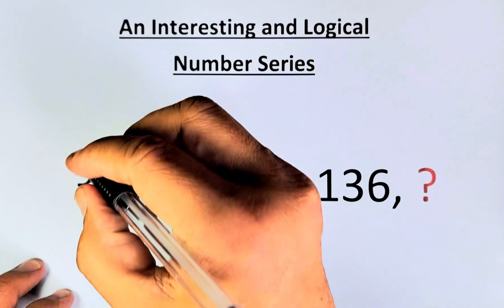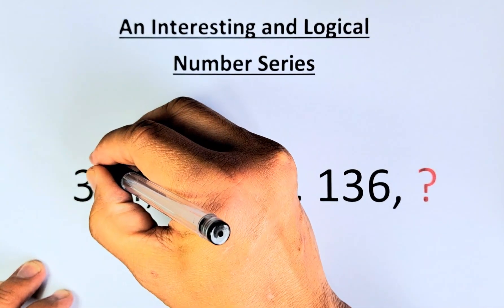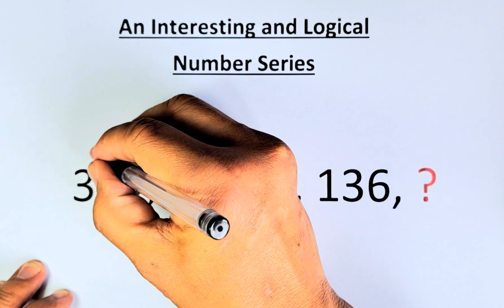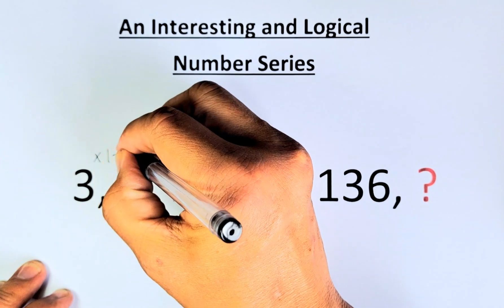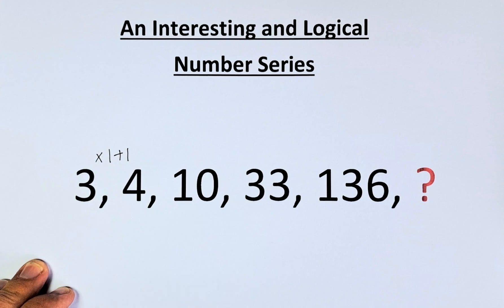To get from 3 to 4, we actually need to do two mathematical operations. You're going to multiply by 1 and you're going to plus 1. So 3 multiplied by 1 is going to be 3, plus 1 is going to give 4.